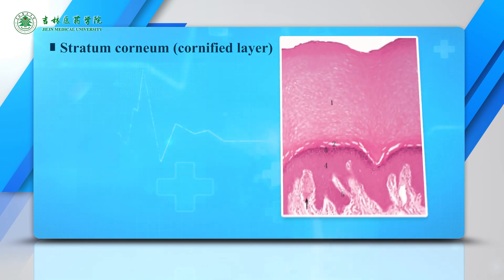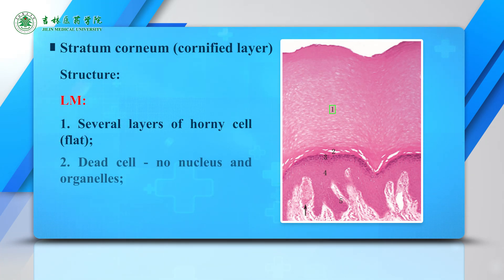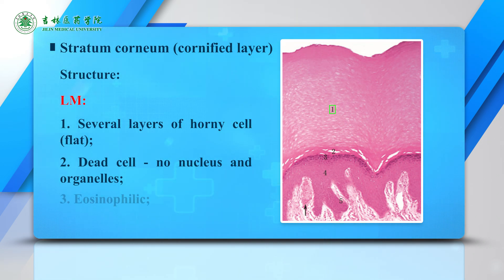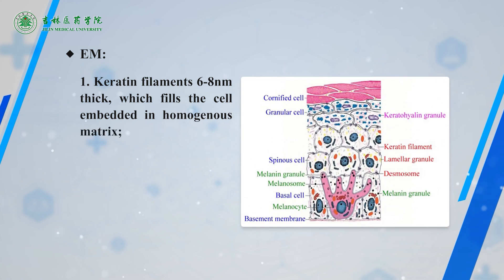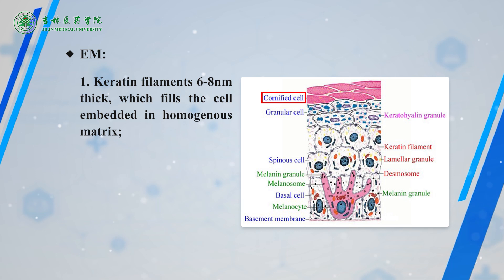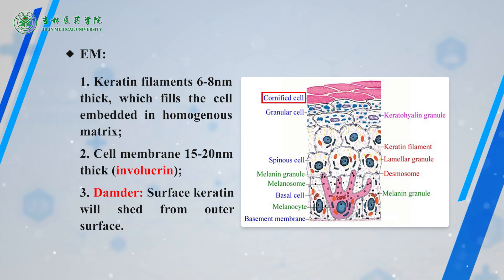The top layer is the stratum corneum. It contains 15 to 20 layers of flat, horny cells, which are dead cells with no nucleus or organelles. The cytoplasm is eosinophilic. By EM, keratin filaments are 6 to 8 nanometers thick, filling the cells embedded in a homogeneous matrix. The cell membrane is 15 to 20 nanometers thick. Surface cells are continuously shed from the outer surface.